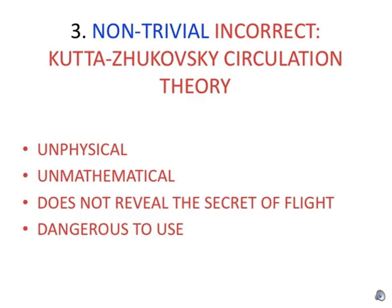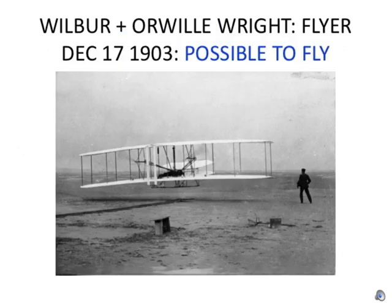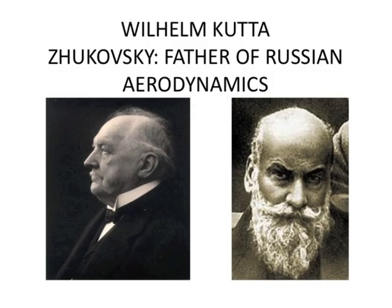The theory presented in advanced textbooks and university education is the so-called circulation theory by Kutta and Joukowski, which represents a non-trivial but incorrect theory, as we shall now see. The Kutta-Joukowski theory came out in 1904 as a reaction to the demonstration in 1903 by the Wright brothers that powered heavier-than-air flight is possible. The undeniable large lift of the wing needed a scientific explanation, and Kutta and Joukowski came up with one. This gave Joukowski the role of father of Russian aerodynamics.